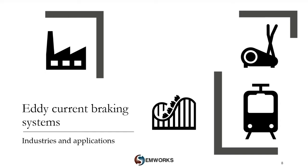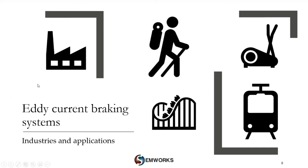Coming to gym equipment — exercise equipment utilizes this technology in many ways. Modern workout machines use eddy currents to create smooth transitions between resistance levels and make for low-maintenance machinery. Eddy current braking systems are also frequently used in recreation equipment, such as auto belay devices to safely assist climbers in their descent from the top.